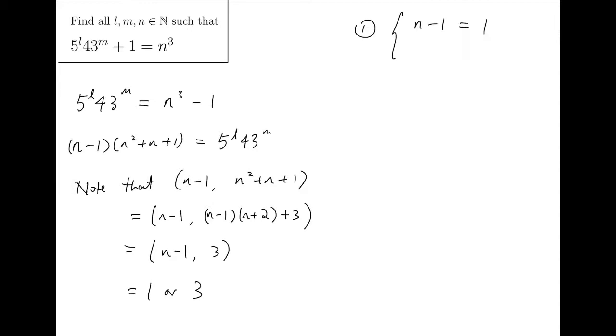The first one is that N minus 1 will not take any prime factor, and N squared plus N plus 1 will take all of them. Or, the other way around, N minus 1 taking all of the prime factors, while N squared plus N plus 1 is just 1.